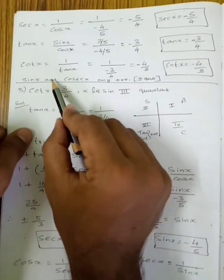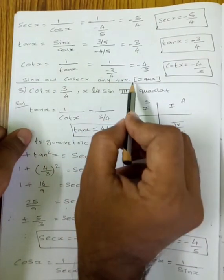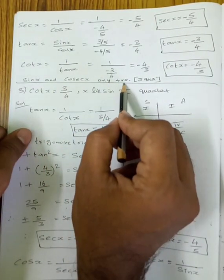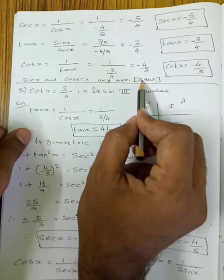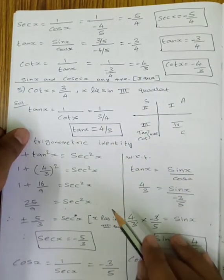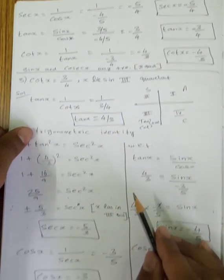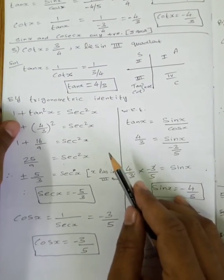So sin x and cosecant x are positive; remaining values in the second quadrant are negative.